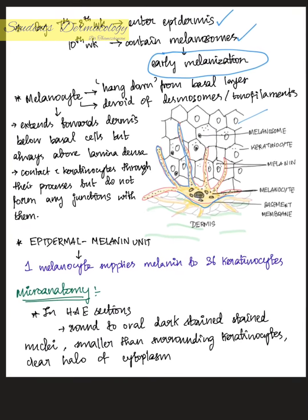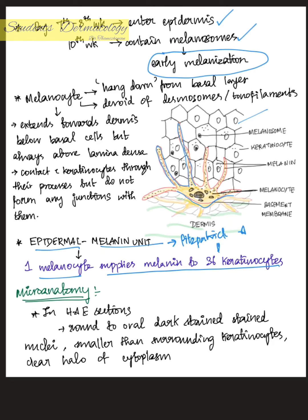The epidermal melanin unit is the melanocyte together with its concerned epidermal cells. One melanocyte supplies melanin to 36 keratinocytes. This term was first coined by Fitzpatrick and Breathnach in the year 1963.